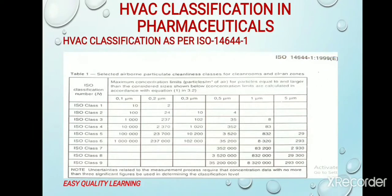This is the ISO 14644-1 classification. ISO 1 to ISO 9 classes are given; in pharmaceuticals we use classes 5 to 8. Class 5 is equivalent to Grade A, Class 6 is equivalent to Grade B, Class 7 is equivalent to Grade C, and Class 8 is equivalent to Grade D. The number of 0.5 micron and 5 micron particles is specified and is used for area classification as per Schedule M, European guidelines, and US FDA guidelines.